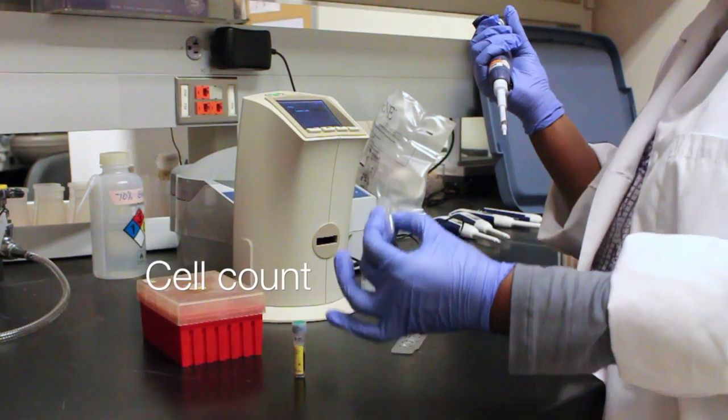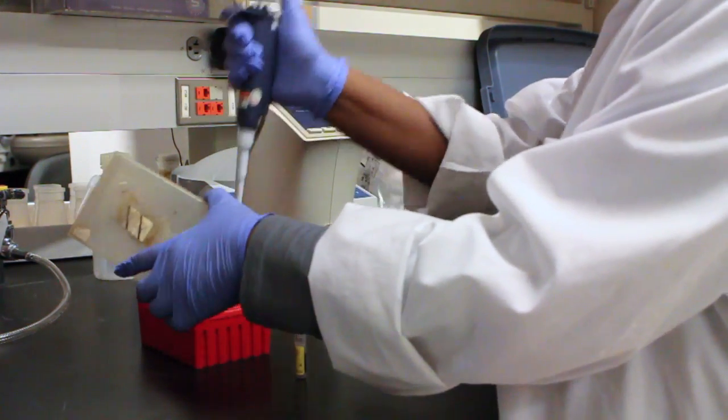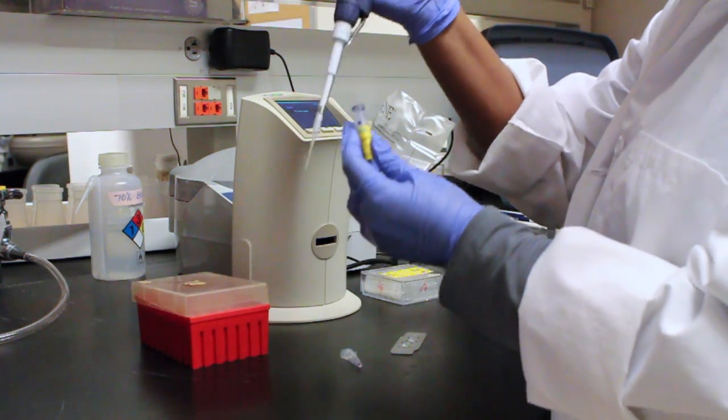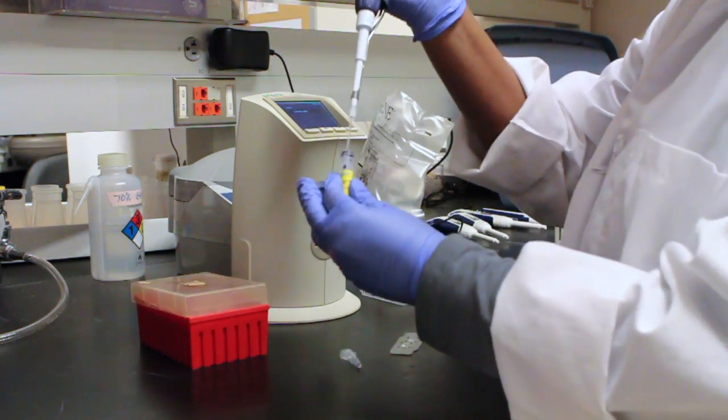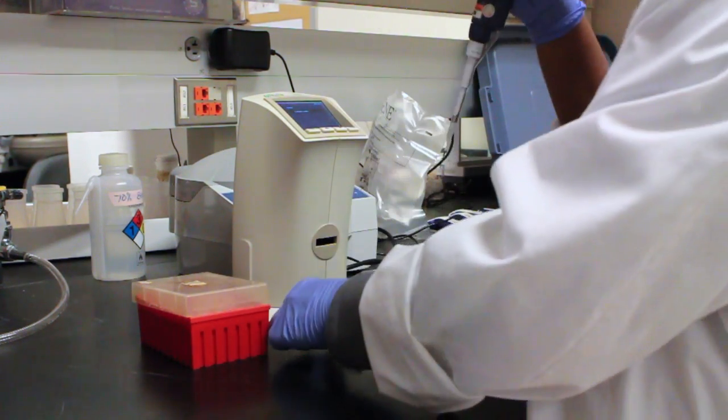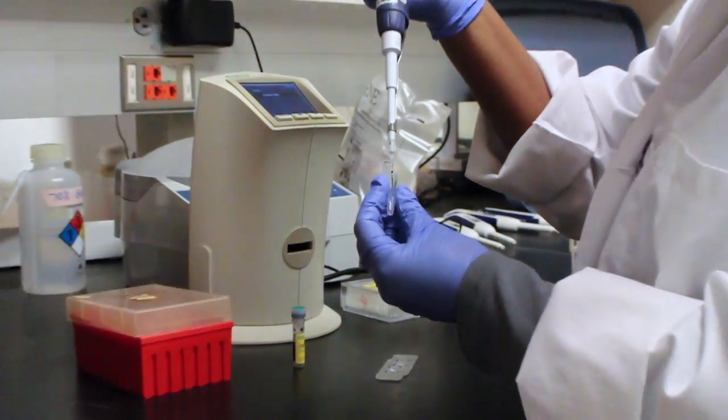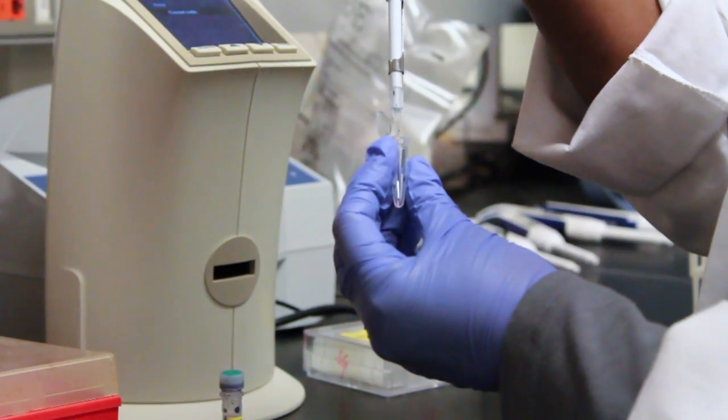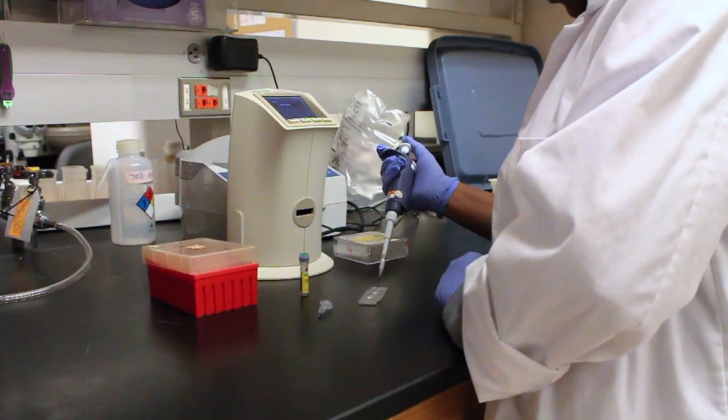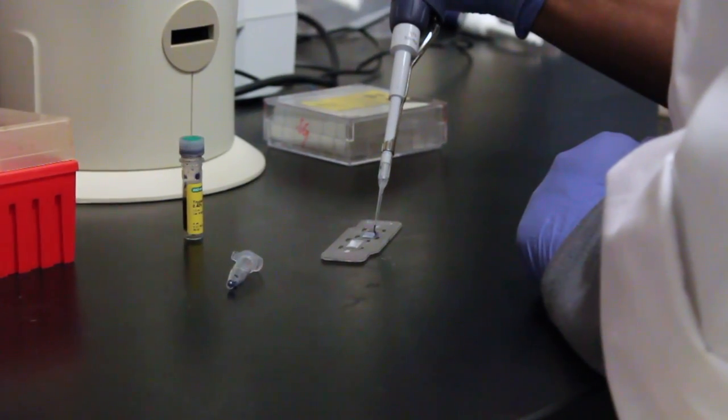Proceed over to the cell counter. Using a new pipette tip, remove 10 microliters of trypan blue and place it into the MC15 that contained your cell sample for a total volume of 20 microliters. Triturate the sample 10 times and remove 10 microliters. Place into the cell counting slide and insert into the cell counting machine.